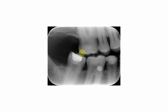Just underneath the amalgam filling you will see another material that lines the pulpal floor of the filling. The radio-opacity of this lining material is less than that of amalgam, and as discussed previously, this is the appearance of zinc phosphate cement, which is typically used as a liner under amalgam fillings.